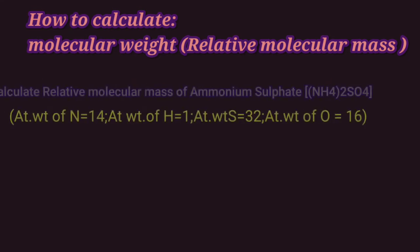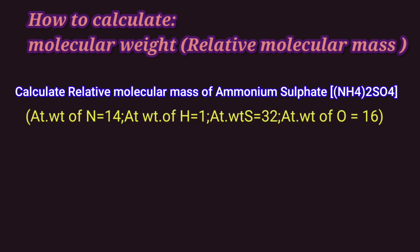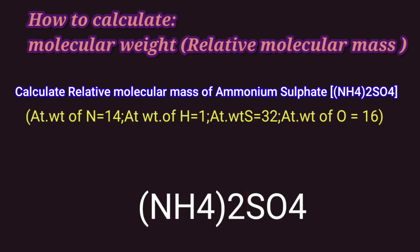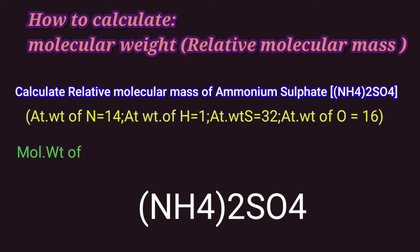Next we will find relative molecular mass or molecular weight of ammonium sulfate. The ammonium radical in ammonium sulfate has 2 nitrogen atoms and 8 hydrogen atoms. We have 1 sulfur atom and 4 oxygen atoms. So to find molecular weight of ammonium sulfate, we add their respective atomic weights.